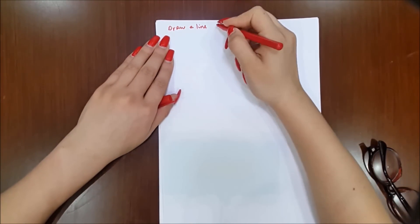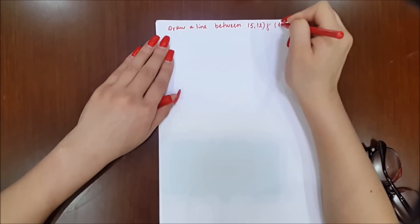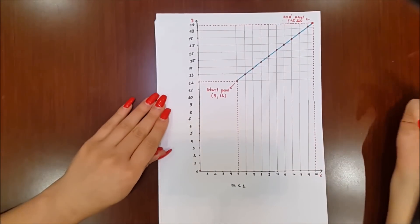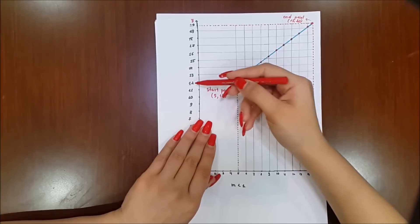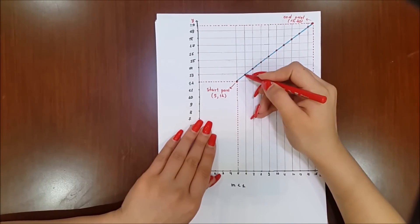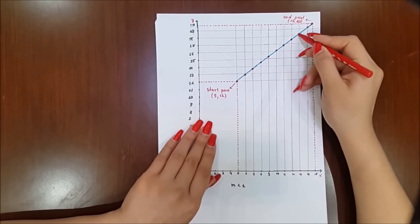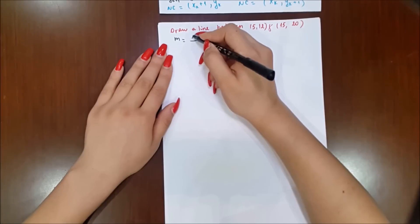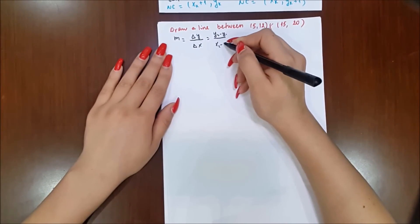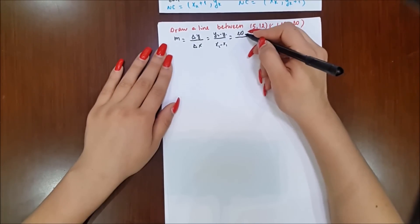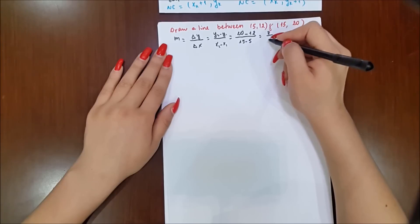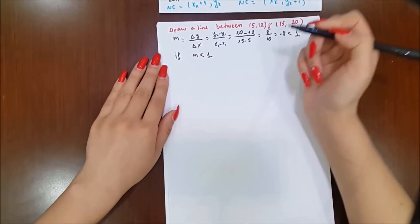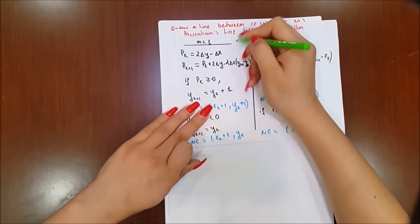Now let's start solving the problem: draw a line between (5, 12) and (15, 20). Here we have the endpoints. I drew a graphic to make it easier to understand — the initial point is (5, 12) and the endpoint is (15, 20). All we need is to find the intermediate points between the endpoints to draw a line on screen. Let's calculate the slope: m equals Δy divided by Δx, which equals 0.8, and that is less than 1.